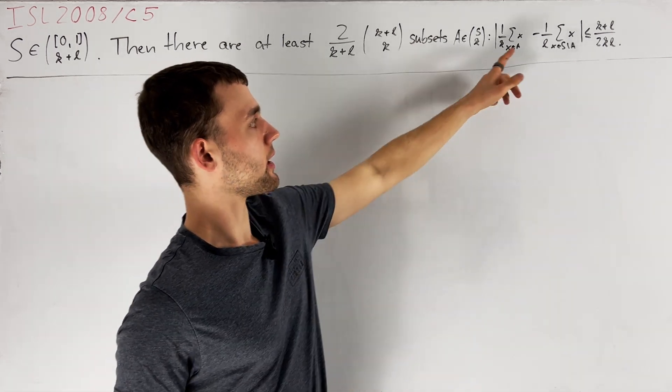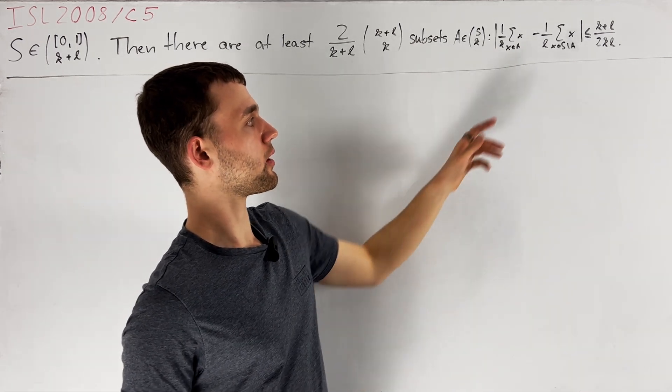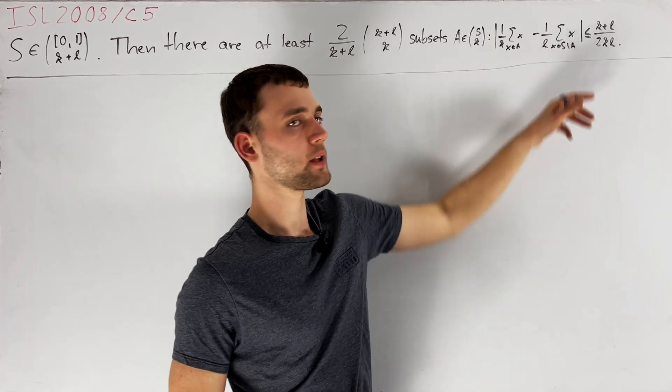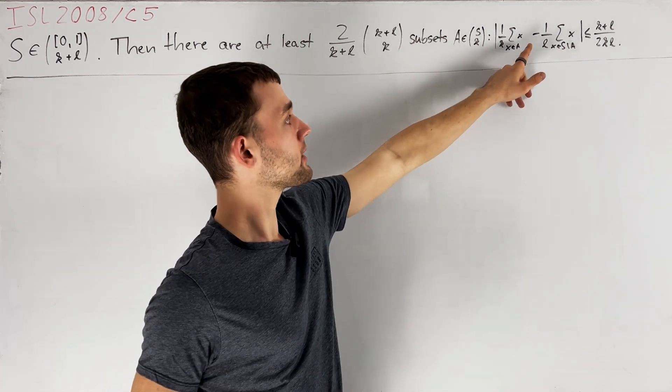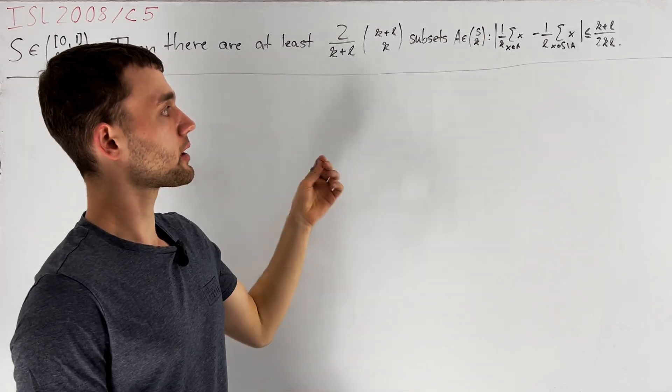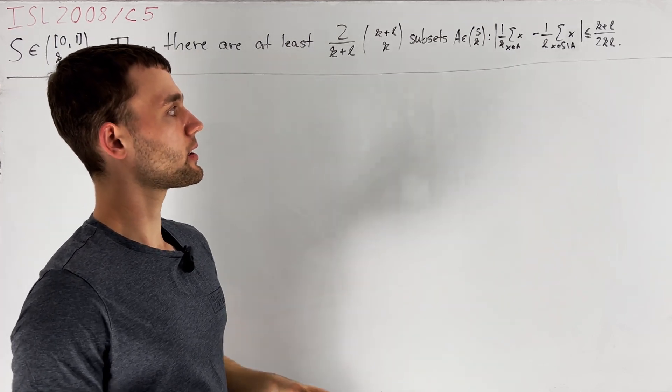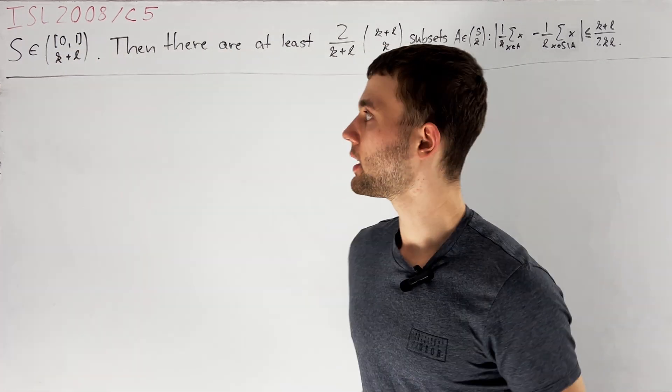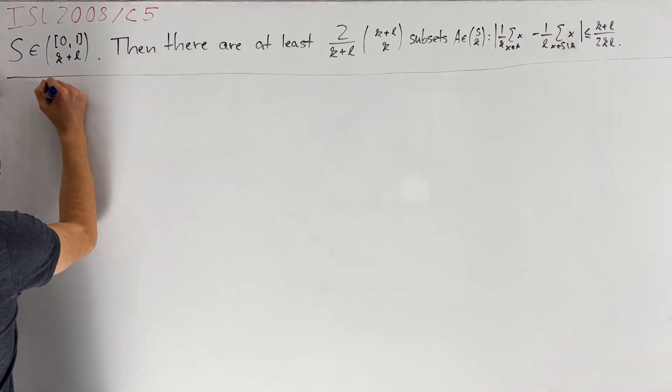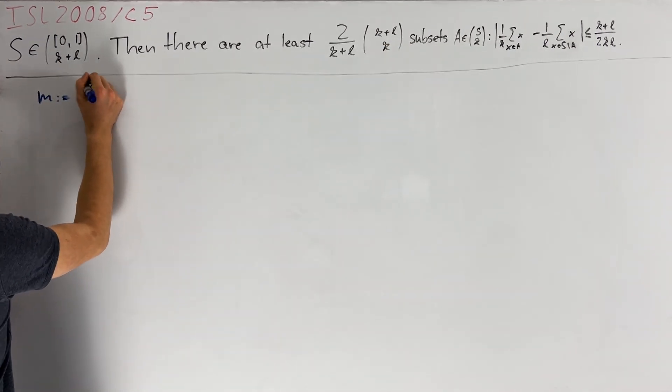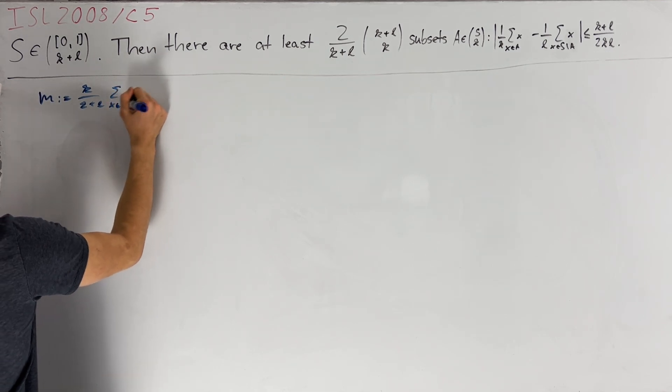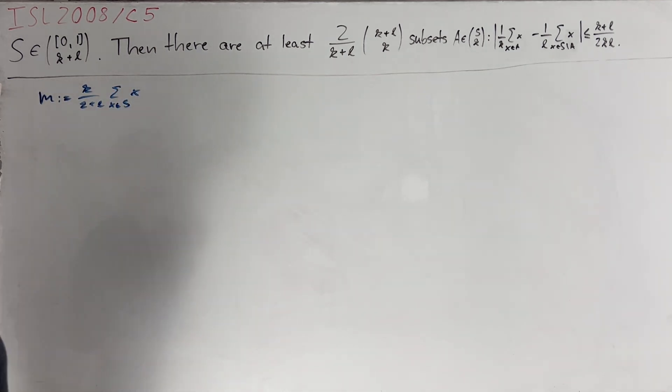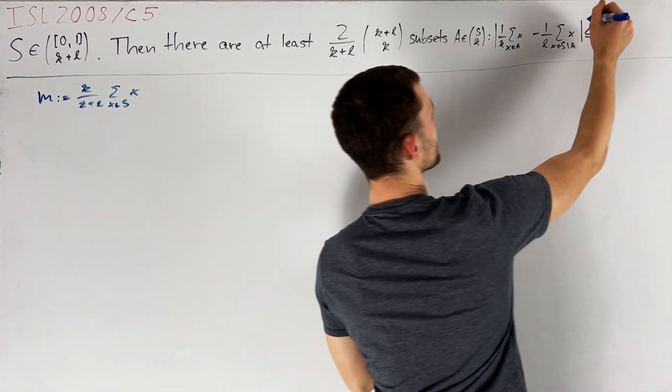Saying that the average of elements in A is close to the average of elements in S minus A is the same as saying that the sum X in A of X is close to K divided by K plus L times the sum of all X. So let us introduce M defined as K over K plus L sum X in S, and take a look at our given equation, Smiley.